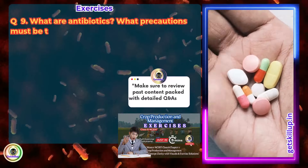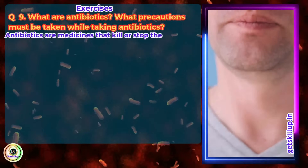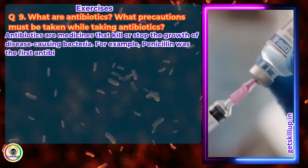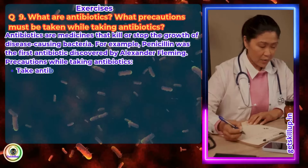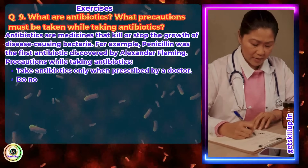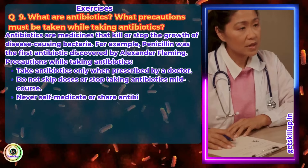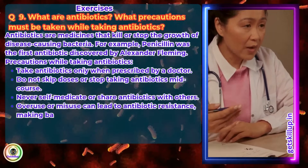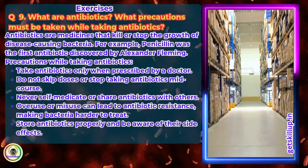Question 9. What are antibiotics? What precautions must be taken while taking antibiotics? Answer: Antibiotics are medicines that kill or stop the growth of disease-causing bacteria. For example, penicillin was the first antibiotic discovered by Alexander Fleming. Precautions while taking antibiotics: Take antibiotics only when prescribed by a doctor. Do not skip doses or stop taking antibiotics mid-course. Never self-medicate or share antibiotics with others. Overuse or misuse can lead to antibiotic resistance, making bacteria harder to treat. Store antibiotics properly and be aware of their side effects.